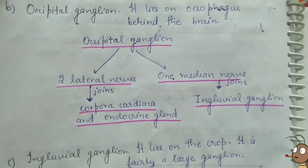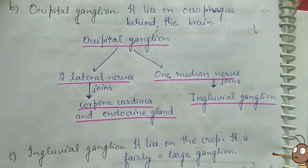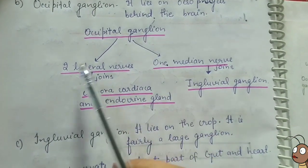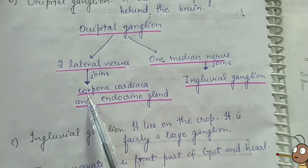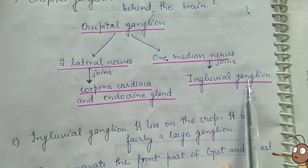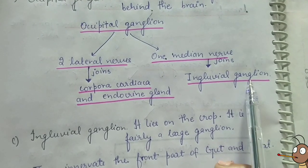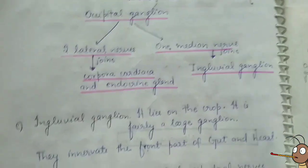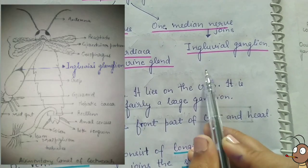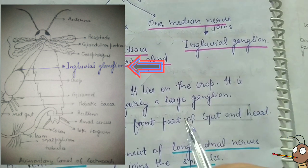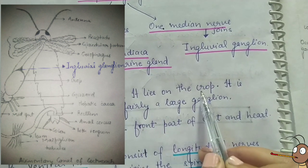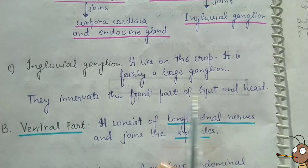The occipital ganglion lies on the esophagus, behind the brain. It gives rise to three nerves: two lateral nerves and one median nerve. The two lateral nerves join the corpora cardiaca, which is an endocrine gland, while the one median nerve joins the inglovial ganglion. The inglovial ganglion is present on the crop — in the digestive system, just after the esophagus there is a large sac-like structure called the crop, and the inglovial ganglion is located on the crop and innervates the front part of the gut.